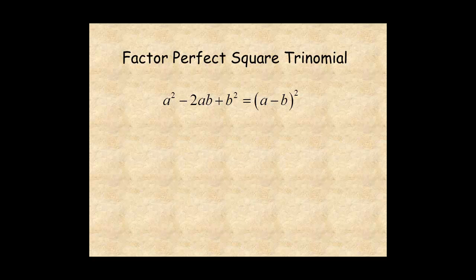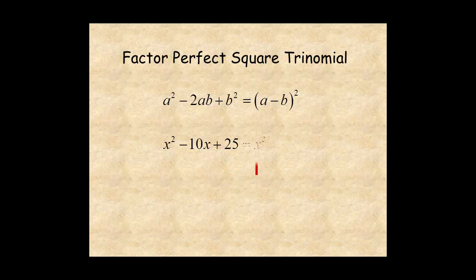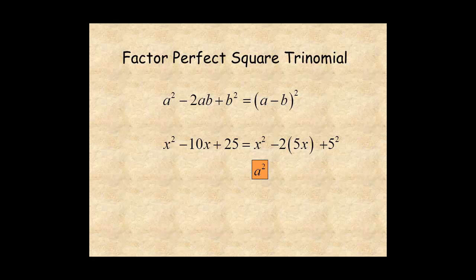There's also a pattern for a minus b squared. The first and last terms are perfect squares, so rewrite the first term as a square, factor 2 from the second term, and rewrite the third term as a square. Now you can see it matches the pattern — here's a squared, here's b squared, and here's 2ab. So a minus b must be x minus 5, and the trinomial factors as x minus 5 squared.